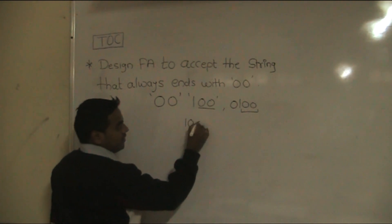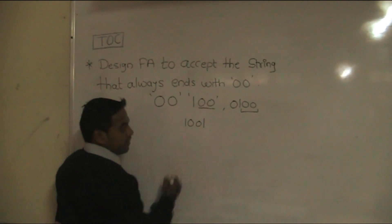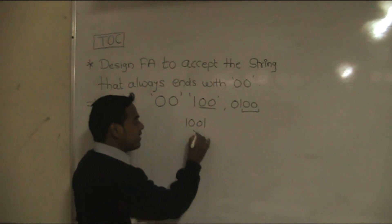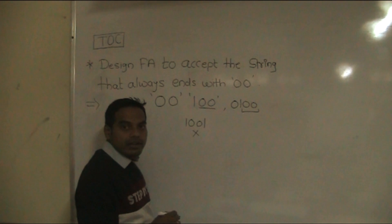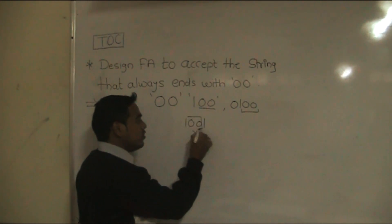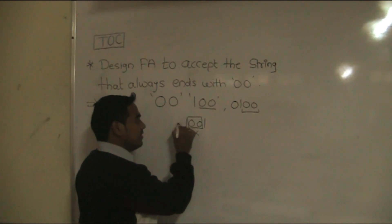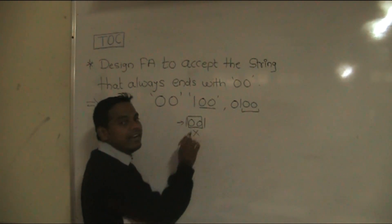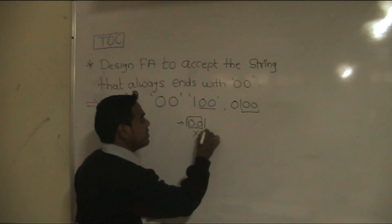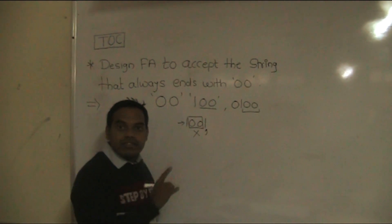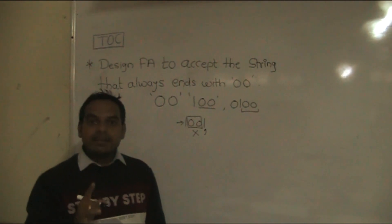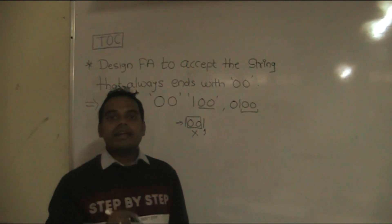If the string is 001, that string is not accepted by finite automata. Even though it contains 00, this string doesn't end with 00 — it ends with 01. That's why this string is not accepted by finite automata.